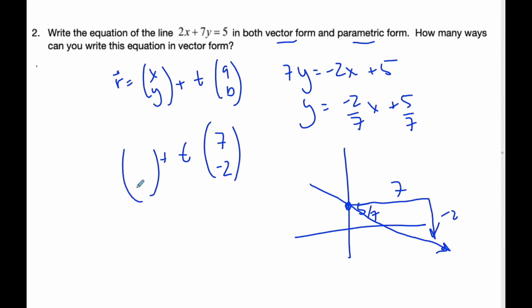And so I need any point that is on this line. And I could use the point 0 and 5 sevenths. That will work. Or I could also recognize that if I let x be negative 1 and y be 1, I'll get 5. So there's lots of possibilities. And so since I first found my y-intercept, which is 0 and 5 sevenths, I'm going to make this my vector equation.